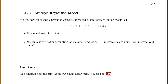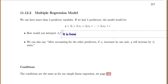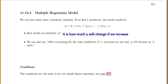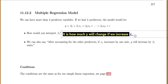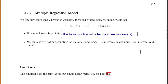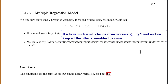And if you get to this situation, how would you interpret your slope? Our slope beta 1 is how much y will change if we increase x1 by one unit, and we keep all the other x variables the same. So our slope is always how much y will change if we increase this one specific variable by one unit and everything else stays the same. Or you can also say, after we account for all of our other predictors, if x1 increases by one unit, y will increase by beta 1 units.